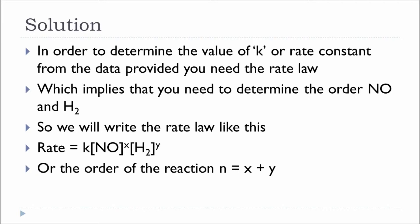The overall order of the reaction n can be calculated by adding x and y. So anytime you get a problem based on the initial rate method and you have to determine the value of k, the implied meaning is you should be able to determine the order of each reactant and write a rate law. Everything relating to that should be calculated.